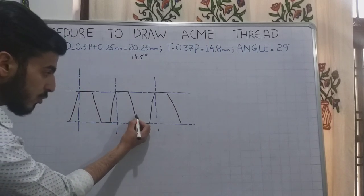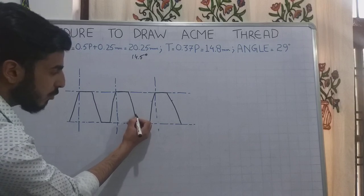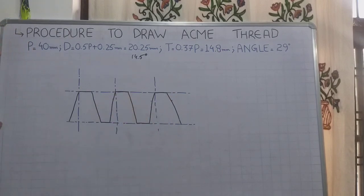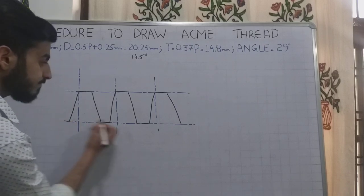Then I join these lines. This should also be 14.8mm, it will come automatically as 14.8mm. And if we see, the angle between these flanks will be 29 degrees. After this, I draw continuous lines.